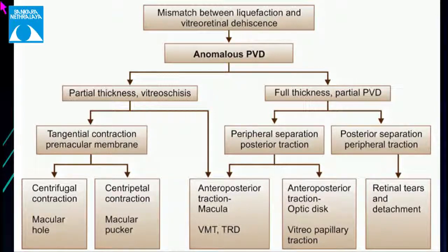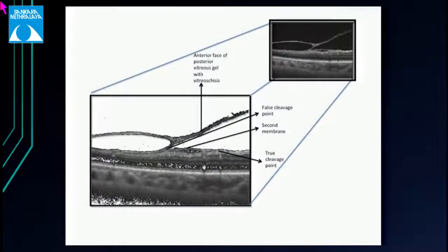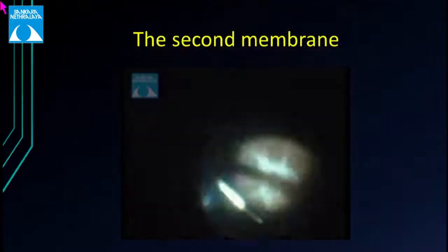Vitreous schisis is splitting of the posterior vitreous cortex into multiple layers, mimicking true PVD. Remnants of the cortical vitreous remain attached to the ILM and areas of firm vitreo-retinal adhesion. The surgical significance is identifying a second membrane during diabetic TRD surgery — the plane of true cleavage versus vitreous schisis. Dissecting the true cleavage plane allows complete relief of traction.